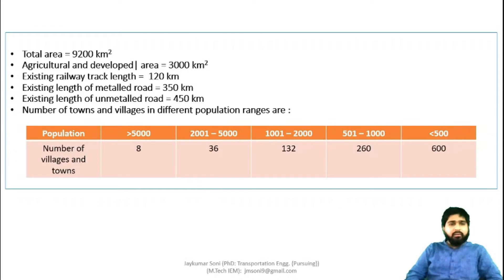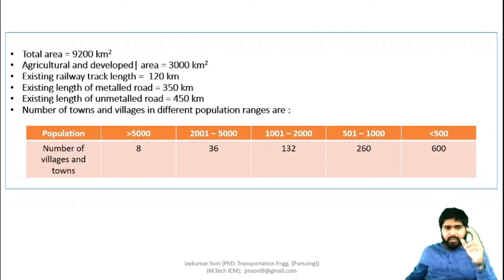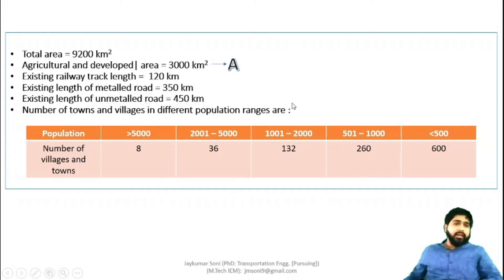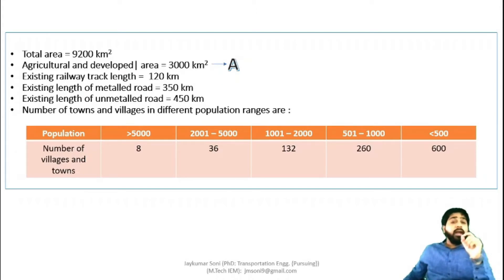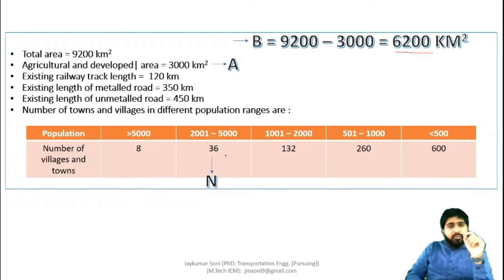From the problem statement: total area is 9,200 km². Agricultural area A is given. Non-agricultural area B is total area minus agricultural area, giving 4,200 km². Existing railway track length R is 130 km. In order to get non-agricultural area, we subtract agricultural area from total area.